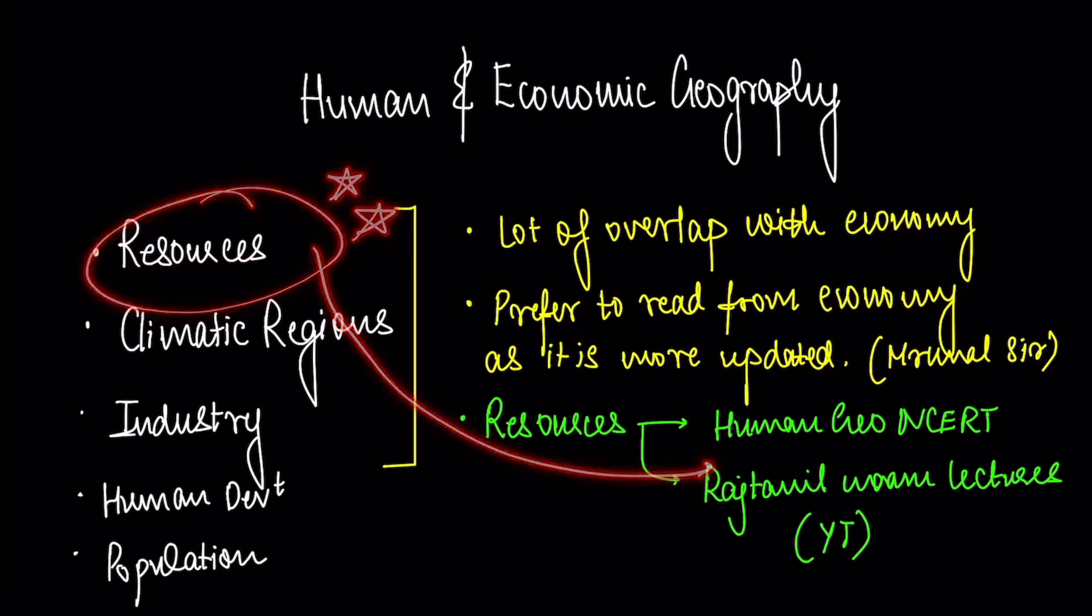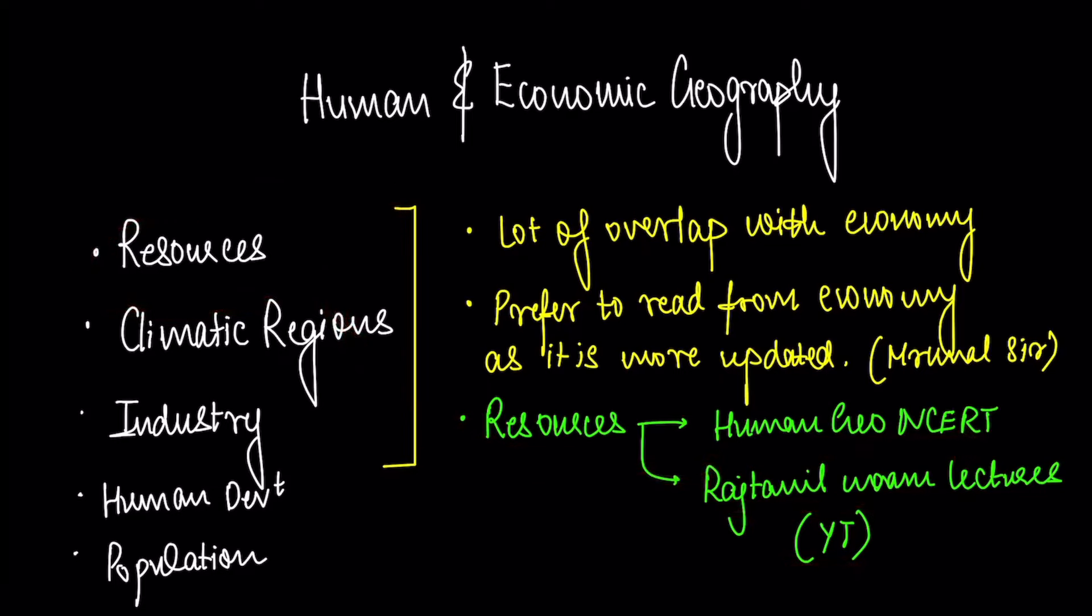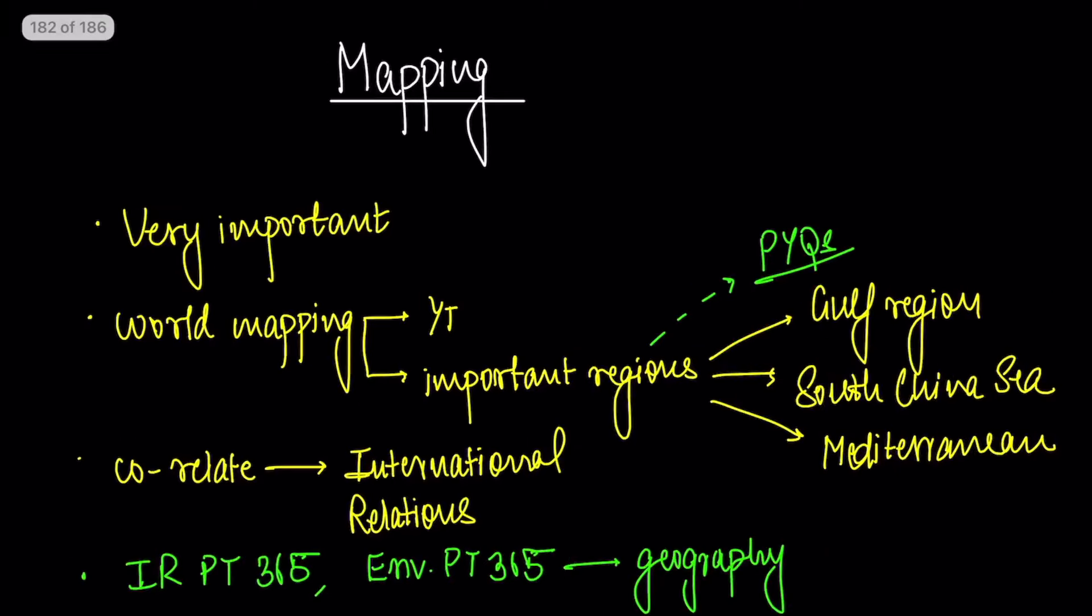Then I used to get back to some part of human geography. I used to read human geography NCERT. But the main important part here is resources of India and resources of the world. For this I have referred to Raj Tanyal ma'am lectures on YouTube as well as the NCRT for human geography. And from this every year two questions come. Try doing that through maps. I think that will be really helpful.